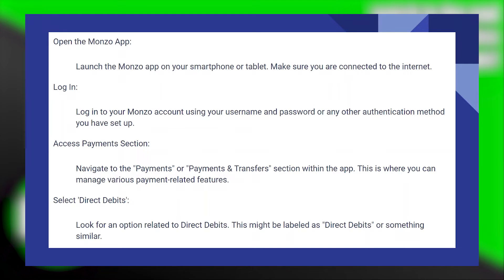Navigate to the Payments or Payments and Transfer section within the app. This is where you can manage various payment-related features. Look for an option related to Direct Debits. This might be labeled as Direct Debits or something similar.